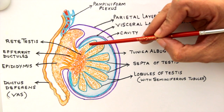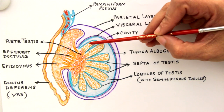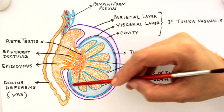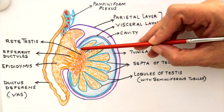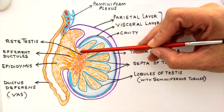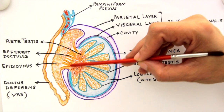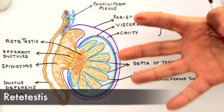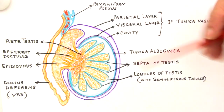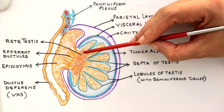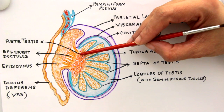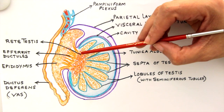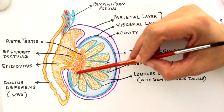The seminiferous tubules are the factories of sperm — they are constantly producing sperms. Each lobule of the testis has up to four seminiferous tubules. At the medial border of the testis there is a network-like structure known as the rete testis, because it resembles a mesh. The seminiferous tubules empty themselves through straight tubules that connect to the rete testis.